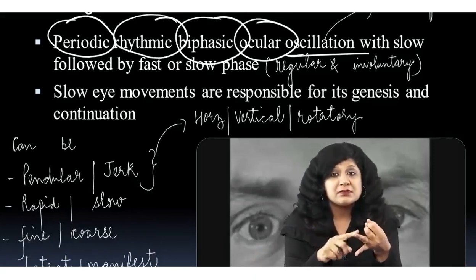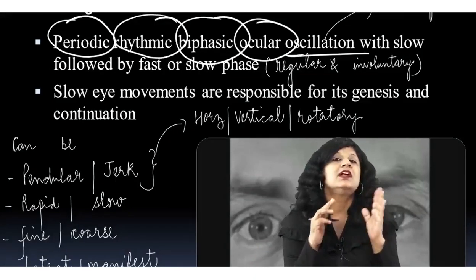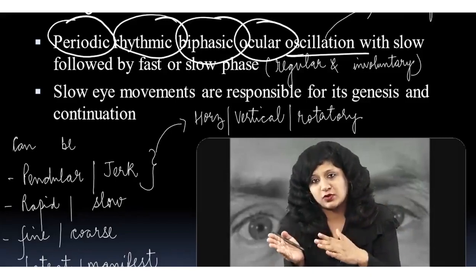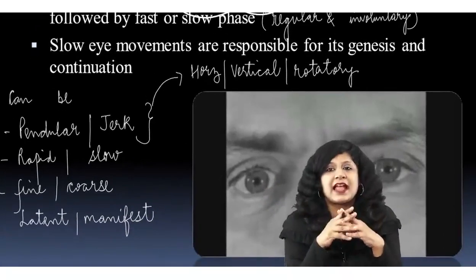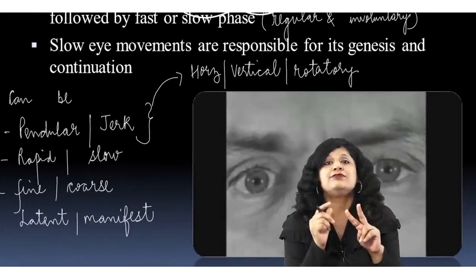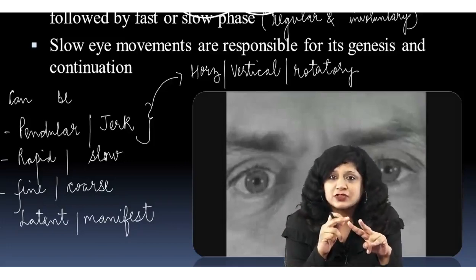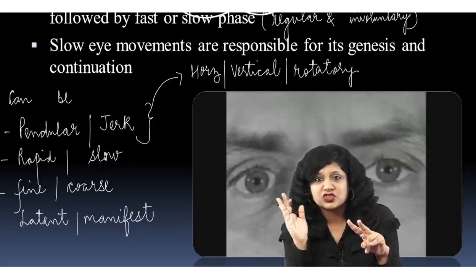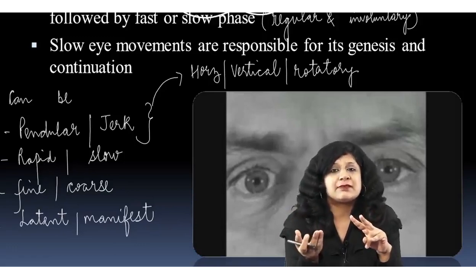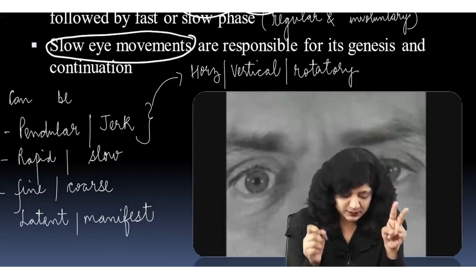They are regular, rhythmic, and involuntary — to-and-fro oscillations containing two phases. It can have a slow phase followed by a slow phase, or a slow phase followed by a fast phase. The slow eye movements are actually responsible for the genesis and continuation of nystagmus. The basic genesis is always initiated by slow eye movements.